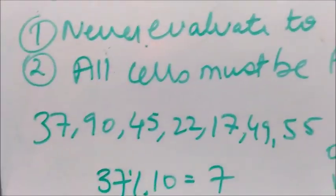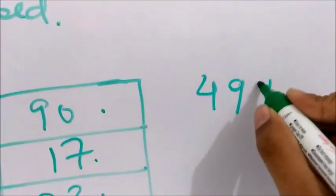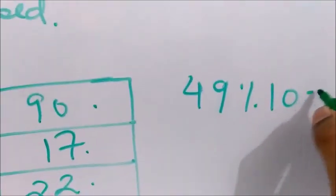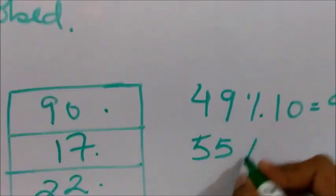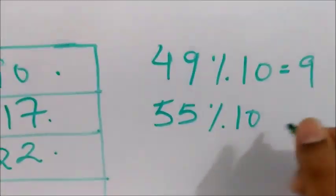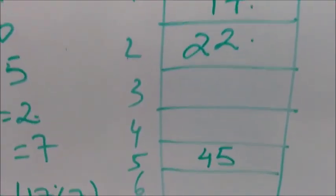Now let's insert next element. Next element is 49. 49 mod 10 comes out to be 9. Then next element is 55. 55 mod 10 comes out to be 5, but 5 is already occupied by 45.